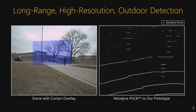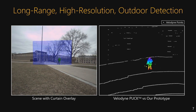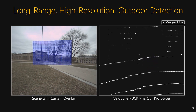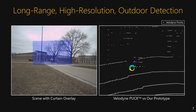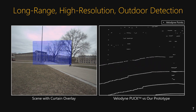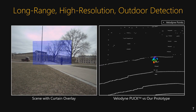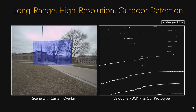Our light curtain device also works well outdoors. Here is an example where we program the light curtain to detect objects along a plane 15 meters away. At this range, the light curtain fully detects the objects as they move across the plane and a LiDAR only detects them as a few points.